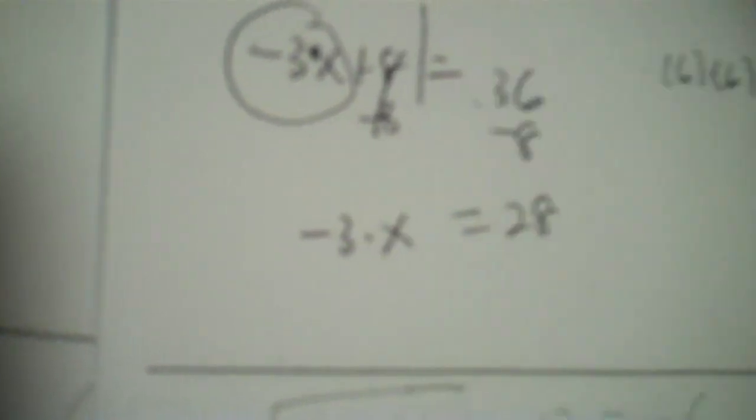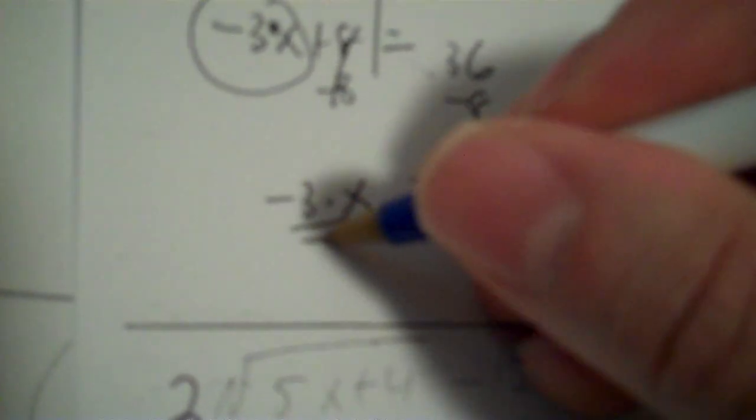Now we solve for x. Again, you have x to the first power only, meaning linear properties. You have x negative 3 and plus 8, so you take out the plus 8 first — that's 28. We take out the negative 3 with divide by negative 3. 28 divided by negative 3 gives you a repeating decimal — use the fraction function and you get negative 9 and 1 third. Remember, I'm not against decimals, just those ones that repeat.